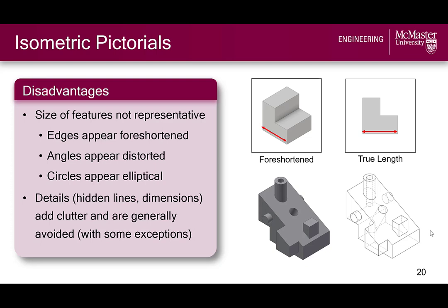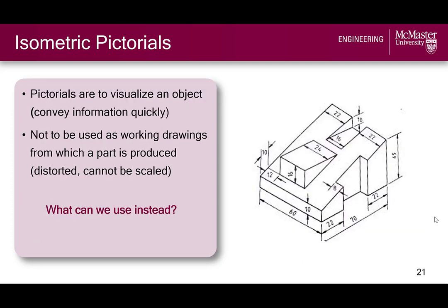There are some exceptions — a case where we might want to include hidden lines is in the event of a part with asymmetric features, like a series of holes on the back of a part. But overall, isometrics and pictorials in general are intended to simply visualize an object. They're not intended to be used as working drawings from which a part is produced, because they are distorted and they can become quickly cluttered, as seen with this relatively simple part dimensioned on the slide.